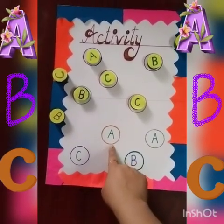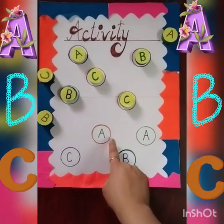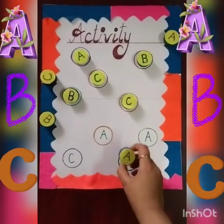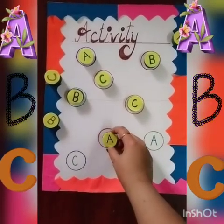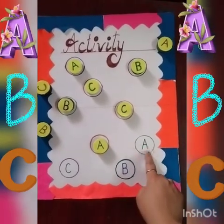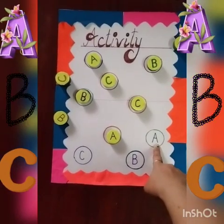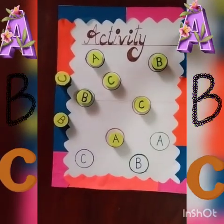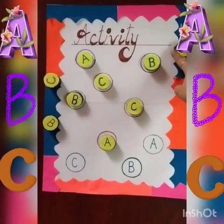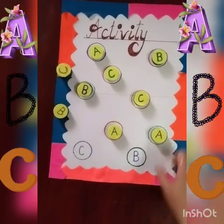Again, tell me which letter is this? It is A. And where is the letter A lid? Yes, this one is A. Keep it here. Again, which letter is this? It is also A. So where is the letter A lid? Yes, this one is letter A. So we will keep it here.